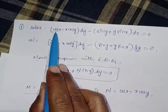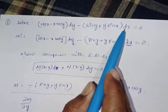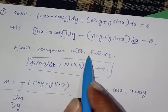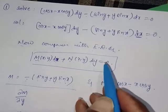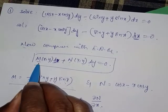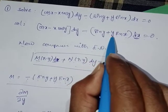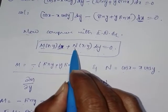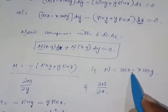Let's review the question once again. The equation is: (cos x - x cos y) dy - (sin y + y sin x) dx = 0. Comparing with M dx + N dy = 0, M = -(sin y + y sin x) and N = cos x - x cos y.